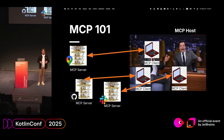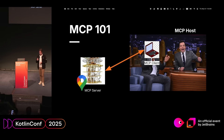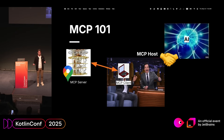An MCP host can manage multiple clients — it can talk to Google Maps, GitHub, and many other MCP-enabled servers. There are a lot of services that already support MCP if you search for them. But we'll focus on just one to make the analogy work. The one key thing still missing, of course, is the big-brain AI.